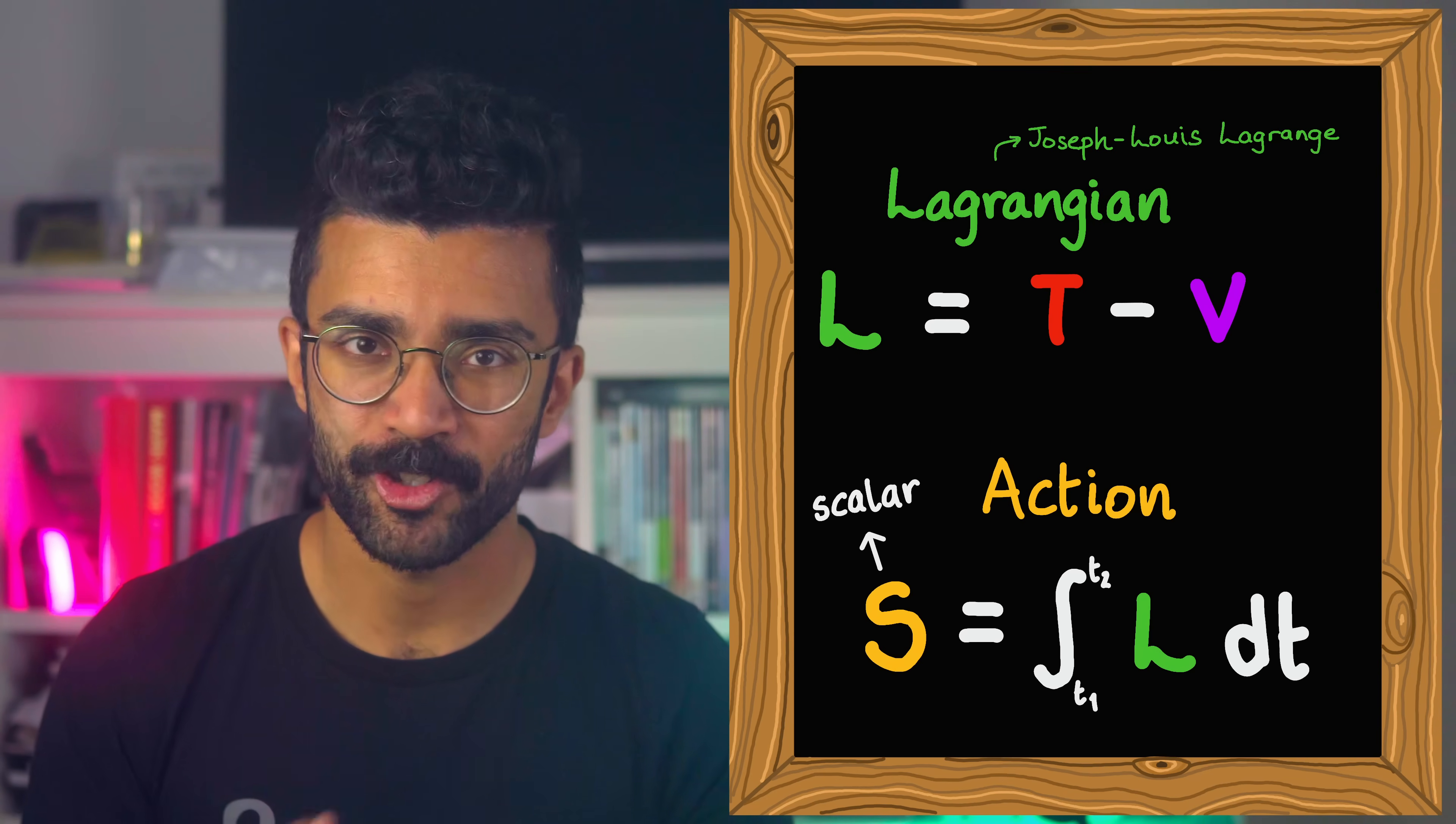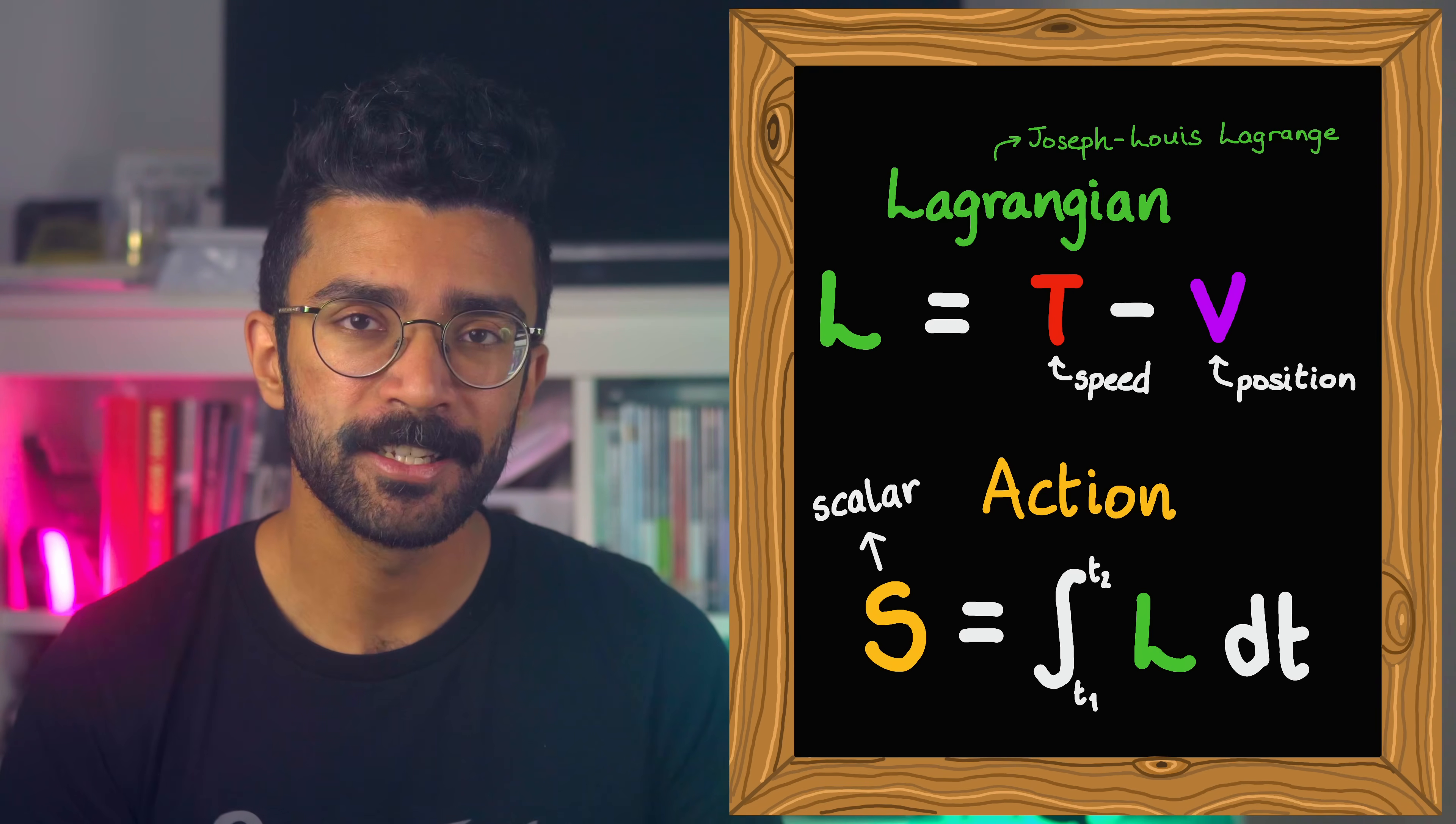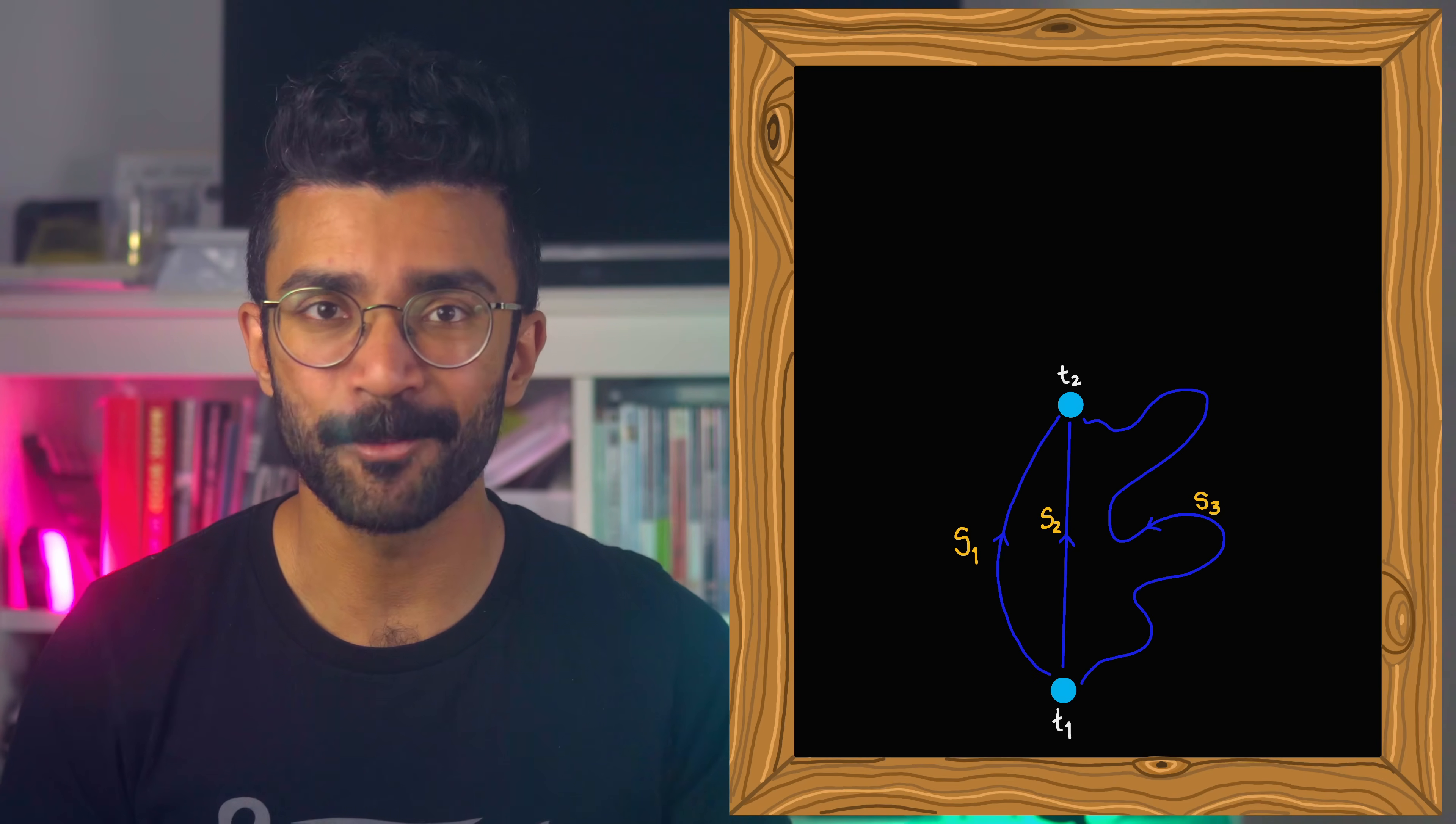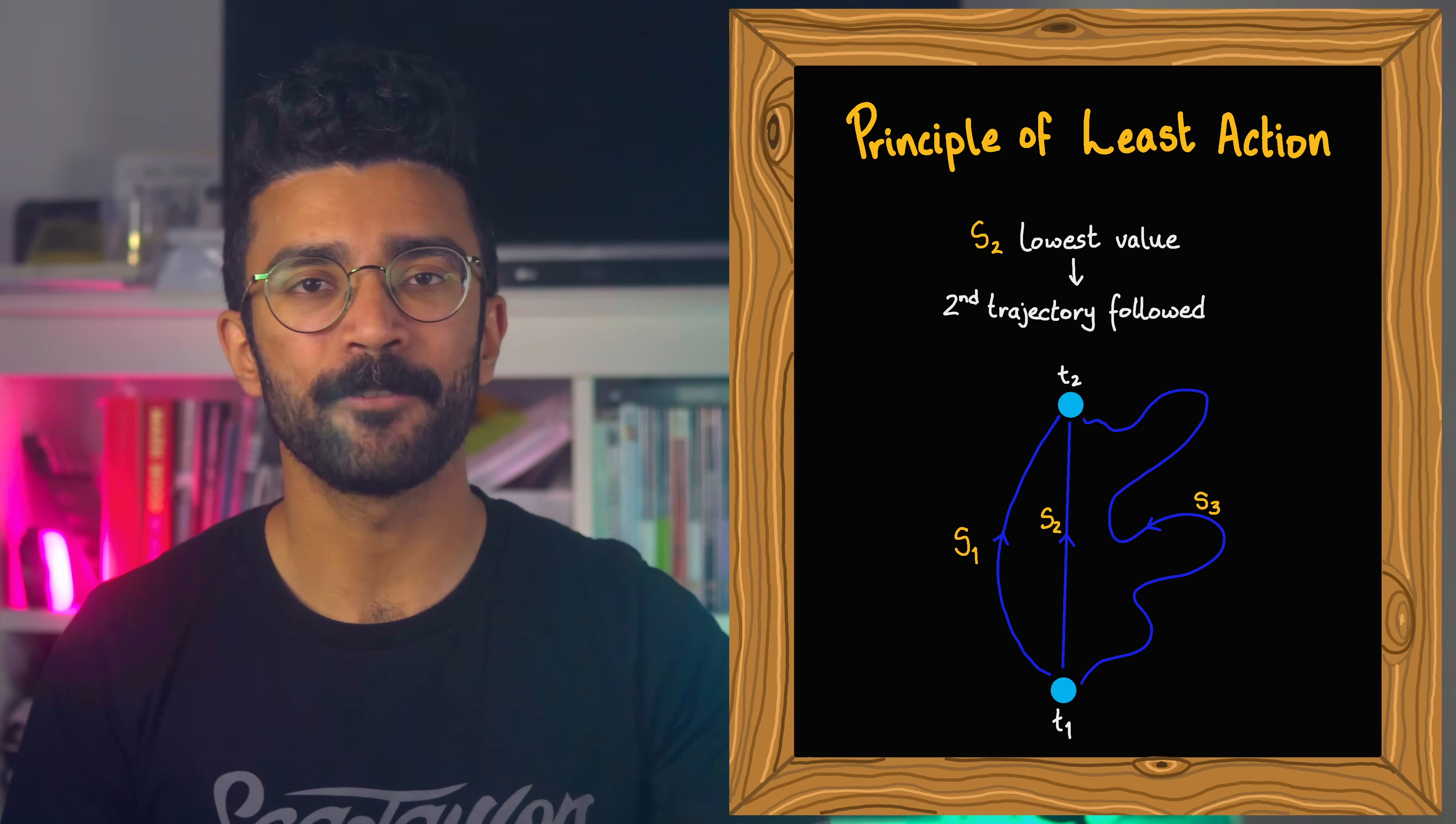We can see that the value of s changes if we change the Lagrangian for our system, and the Lagrangian changes if our system has different kinetic and or potential energies. And these energies depend on, in this case, the particle speed and position. Therefore, different values of s represent different trajectories that the particle can take through space between the times t1 and t2. The trajectory that our particle actually ends up taking is the one for which the value of s is the smallest it possibly can be, or minimal. This is known as the principle of least action.